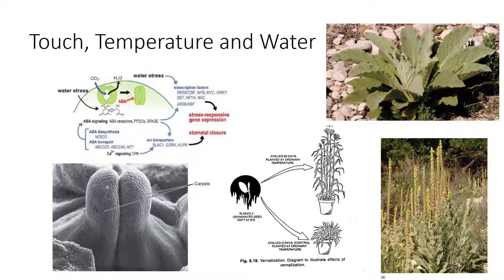The presence of water probably does not act like a signal in the same way as other factors. Roots never actually grow toward water, but instead grow in all directions. Those that happen to grow toward water grow more rapidly because of the favorable environment. Water scarcity triggers plant responses that help the plant cope with water stress. Abscisic acid triggers closure of stomatal pores, inhibits production of new leaves or thicker cuticles, and abscission of leaves.